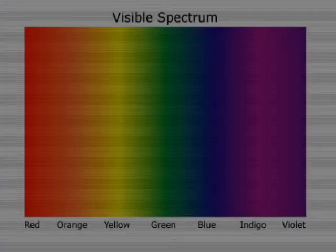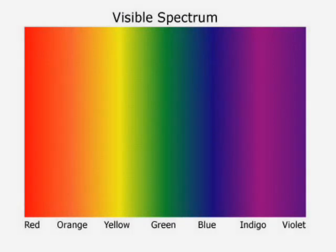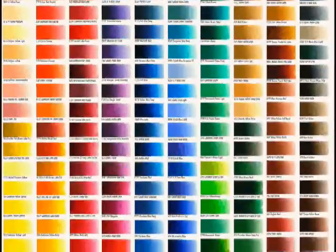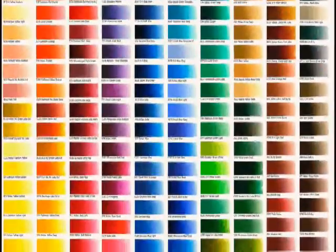This arrangement of colours is known as a spectrum. The spectrum in order is red, orange, yellow, green, blue, indigo and violet. In art theory, colours are called hues.